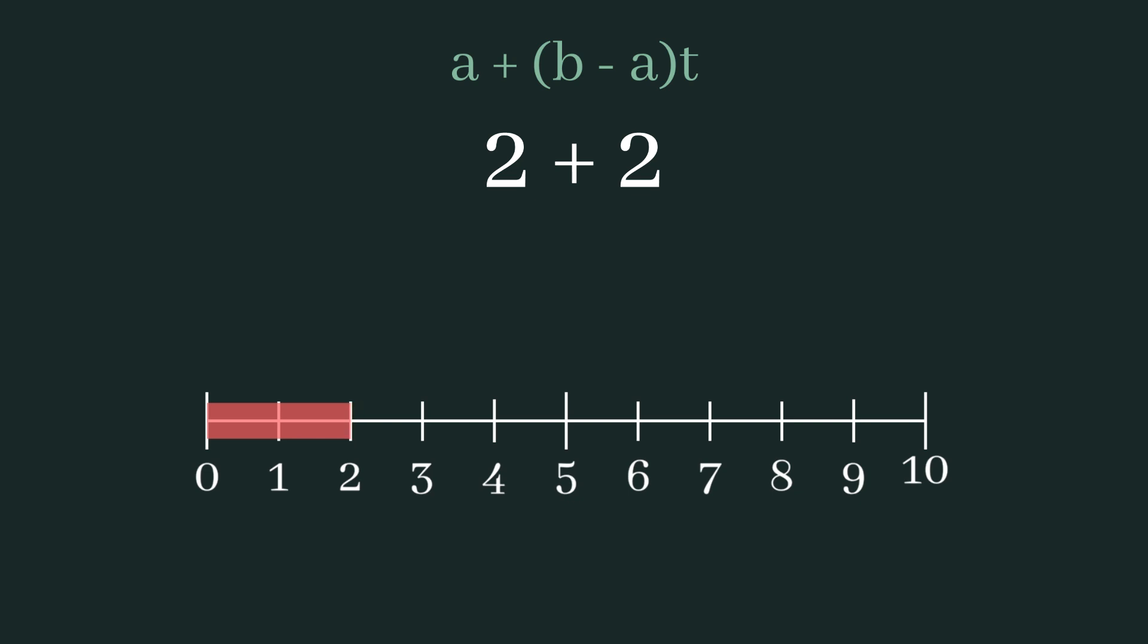Finally, we add this result to the start value, which is 2. Visually speaking, this offsets the position of the bar so that it begins at the start value instead of 0, and since the starting value is 2, and the length of the bar is 2, this results in 2 plus 2, which is 4, the final result of the lerp.